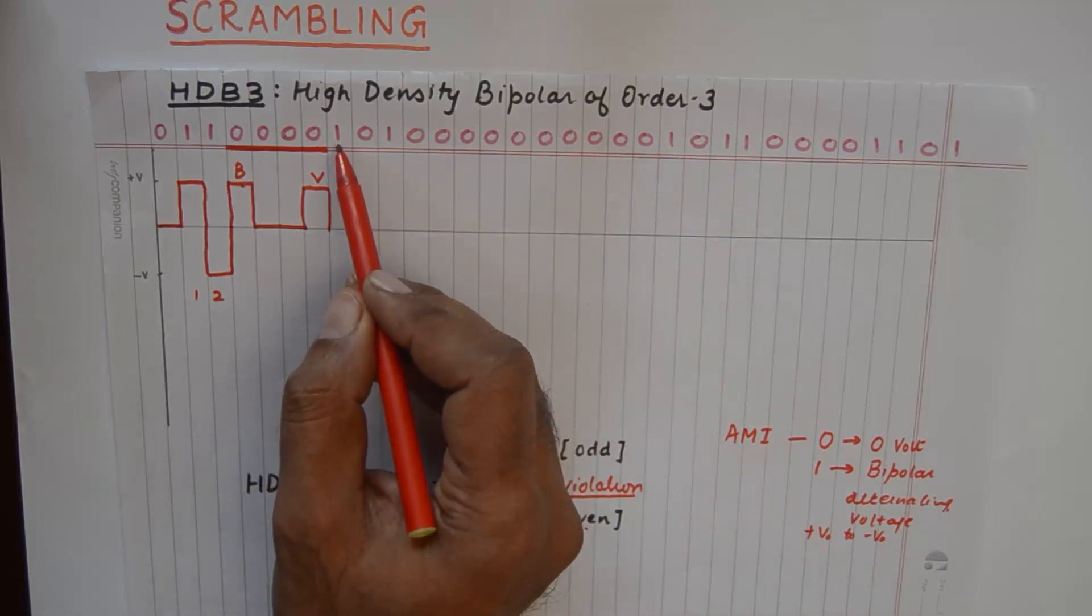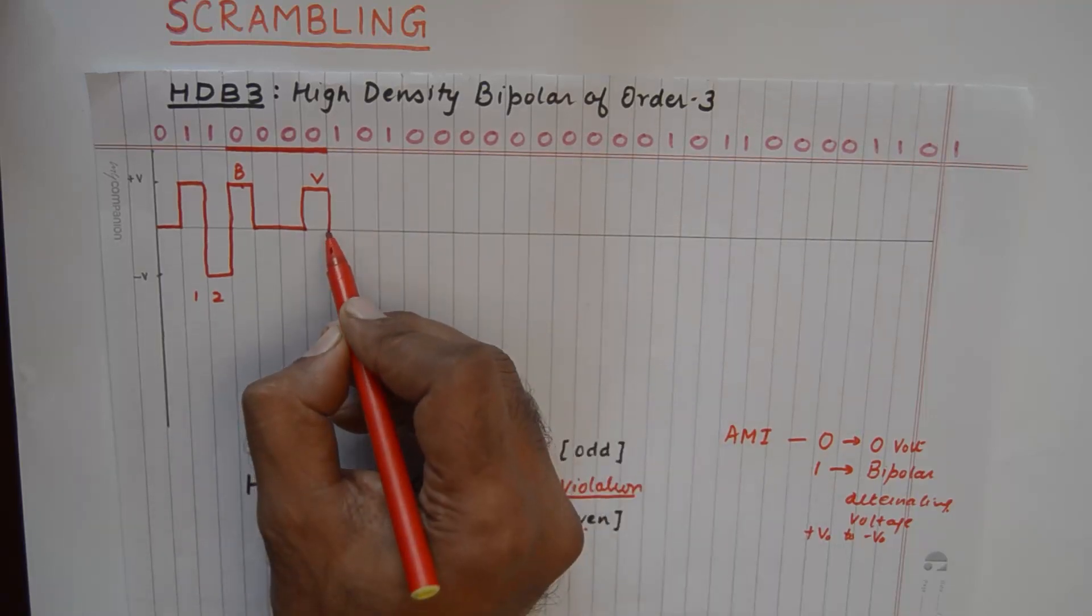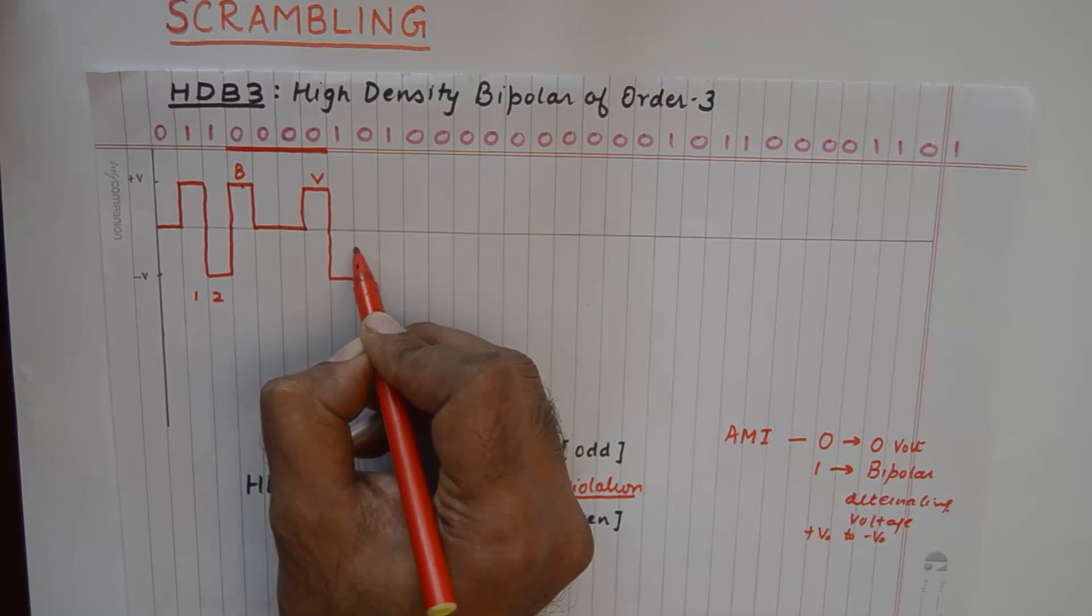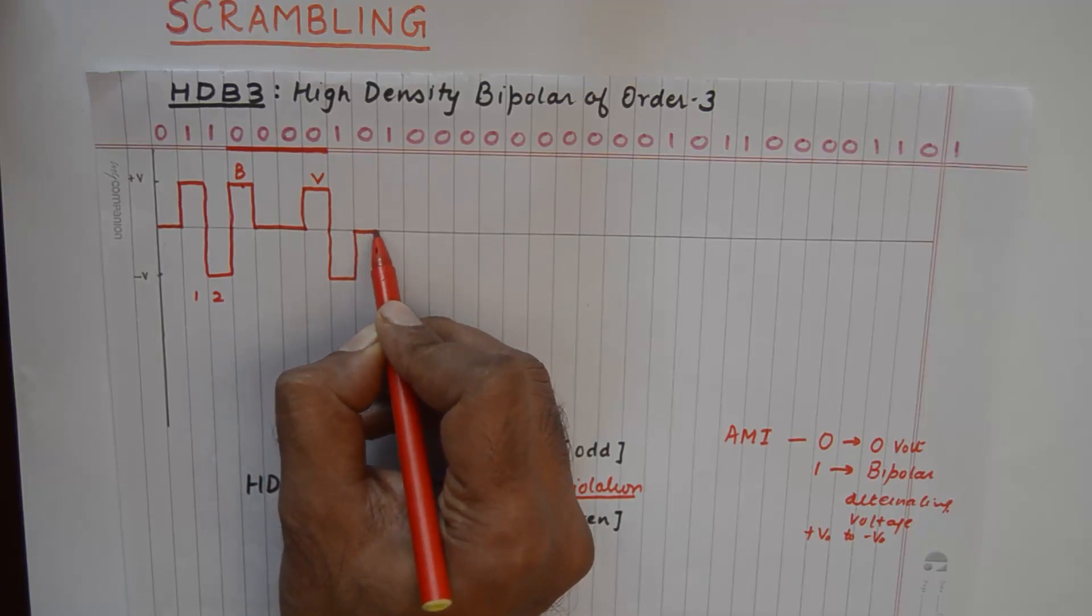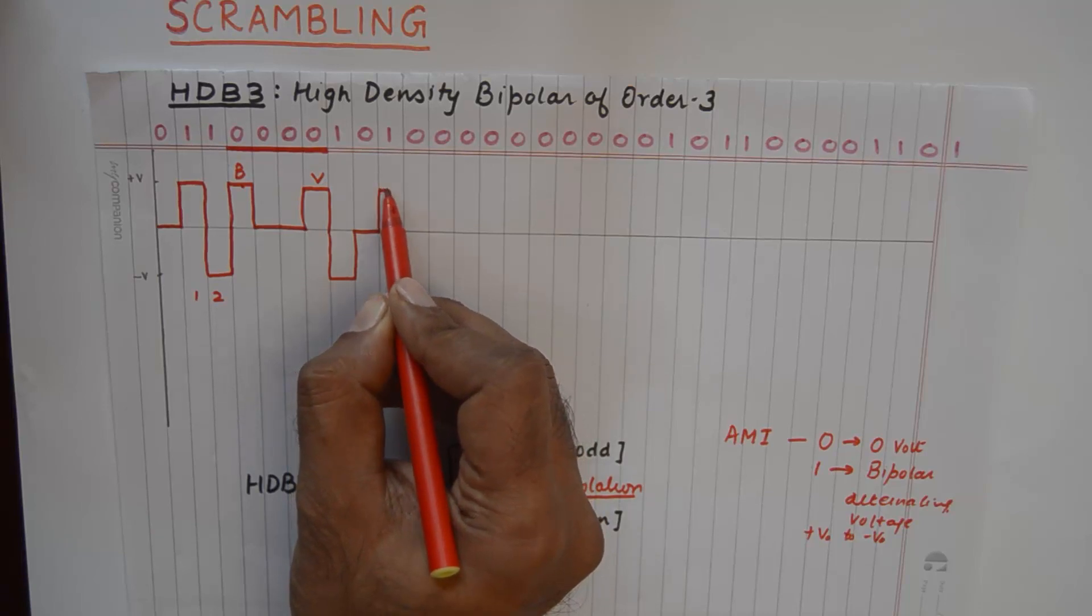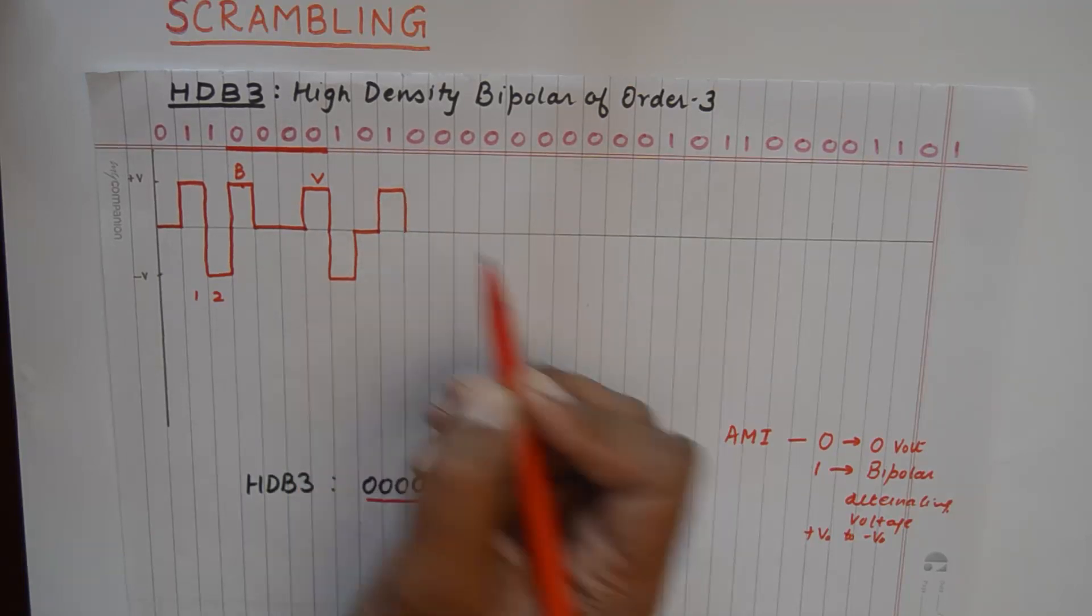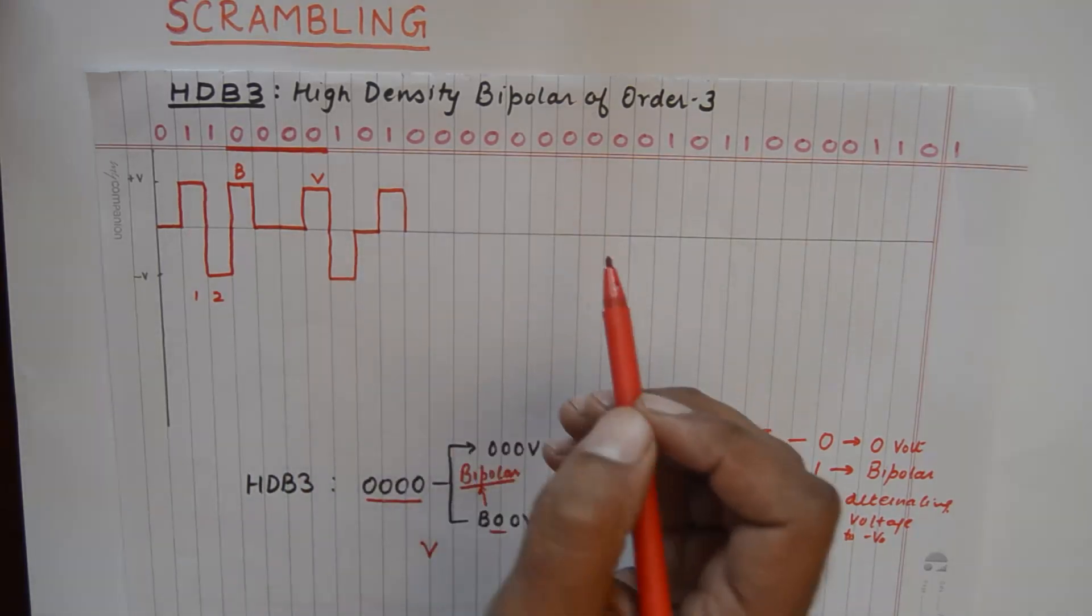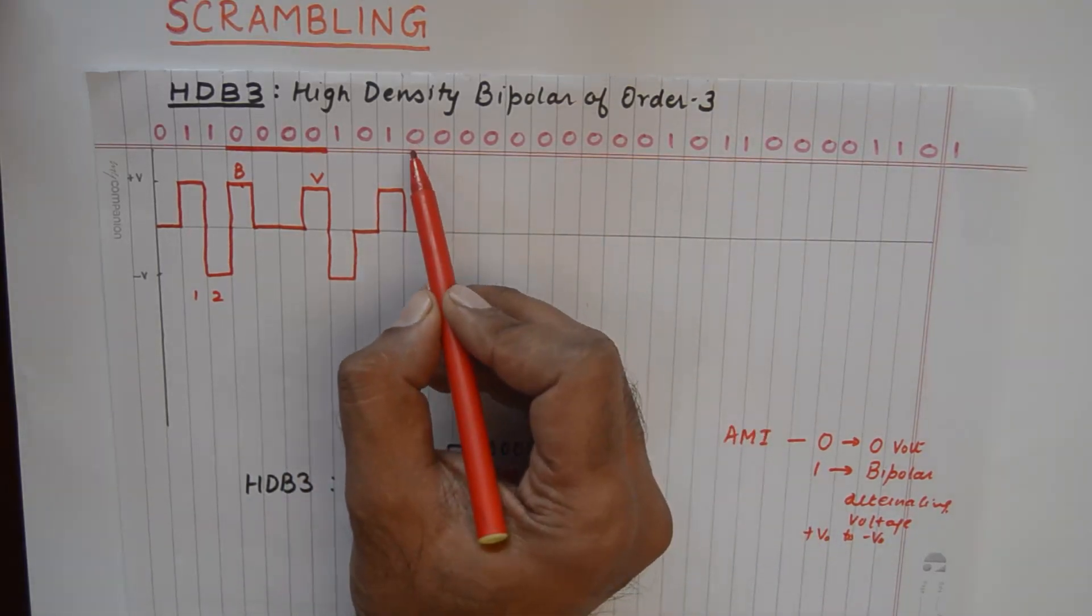And okay, now we understand that we have a one here which will transition normally, bipolar transition. So it goes into a negative territory and a zero is represented by a zero and a one again will be represented by an alternating mark, going into plus V. Now we need to make a decision on these four.